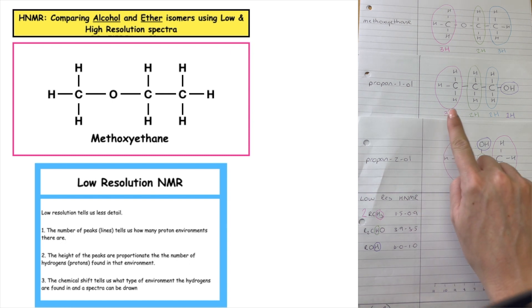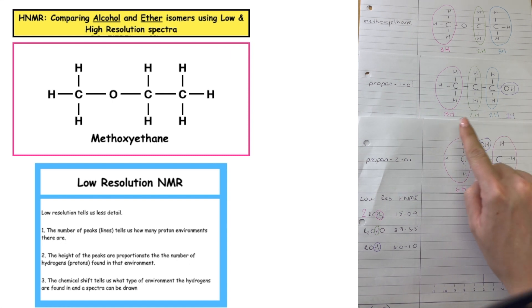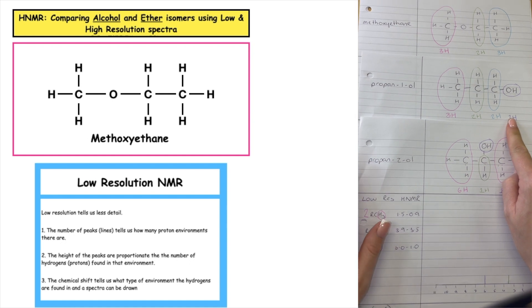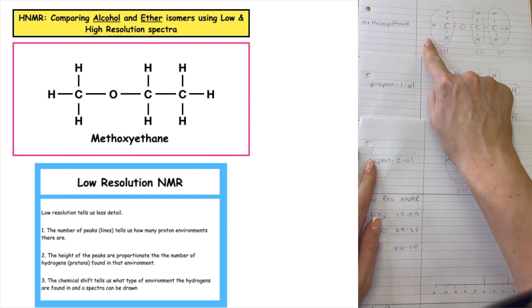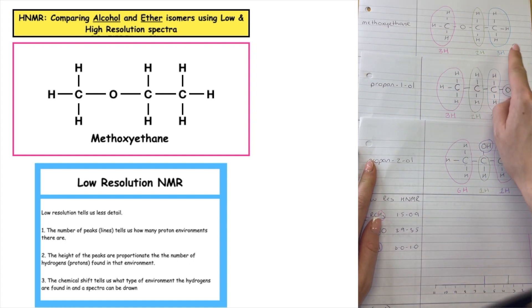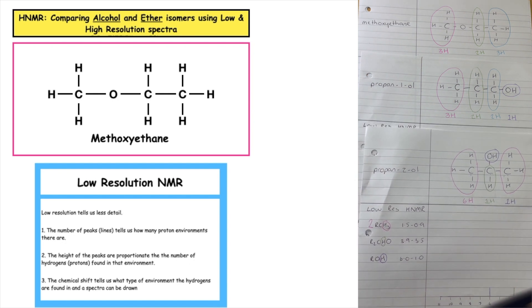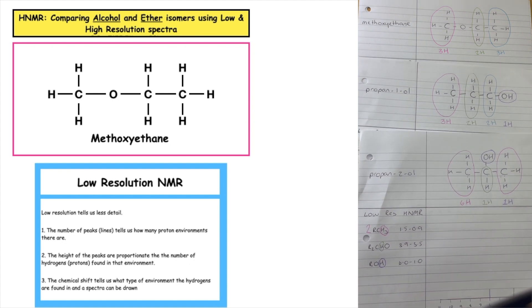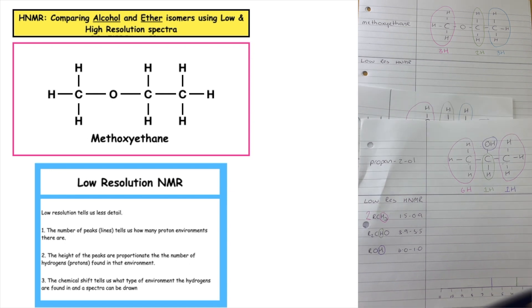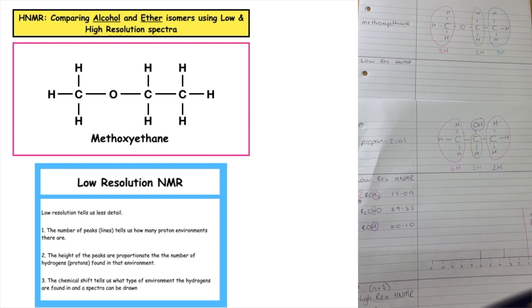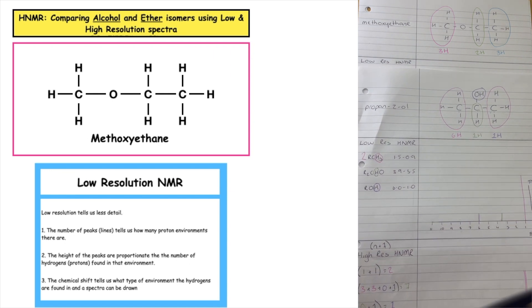We can identify the propane-1-ol straight from that because this would have four peaks, whereas propane-2-ol and methoxyethane would have three proton environments. So that would allow us, just from looking at the number of proton environments and the number of peaks that would be on our low resolution, to identify between those organic molecules.